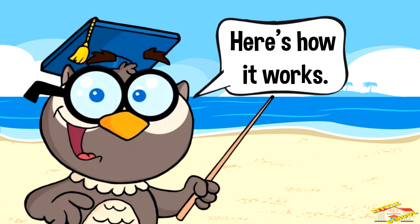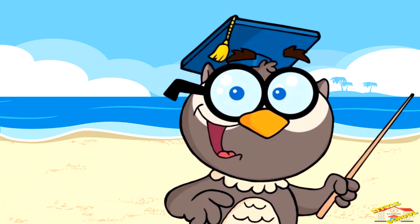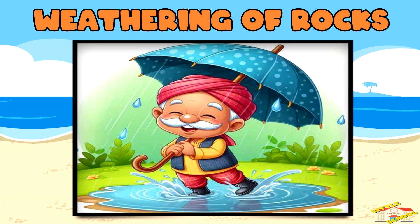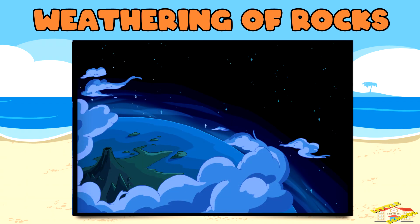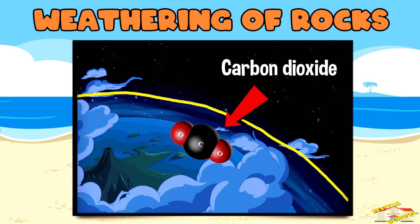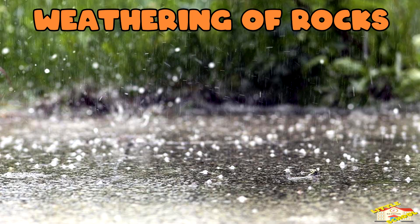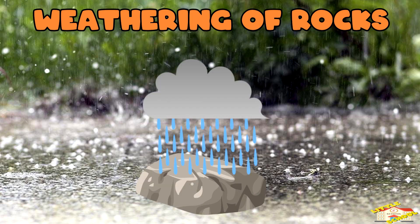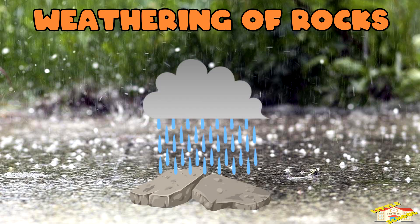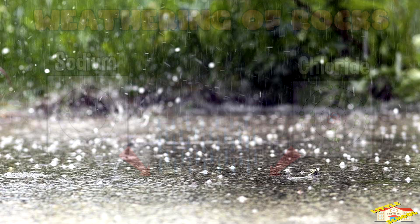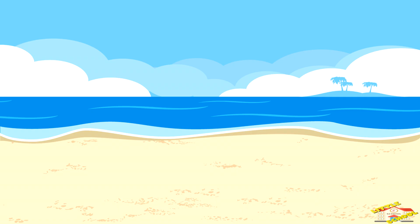Here's how it works. Weathering of rocks: rainwater is slightly acidic due to dissolved carbon dioxide from the atmosphere, forming carbonic acid. When rain falls on land, it breaks down rocks and minerals, releasing ions like sodium and chloride.